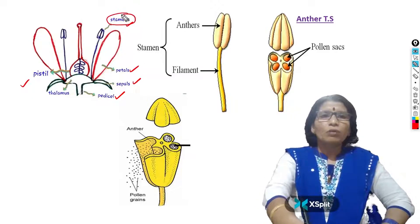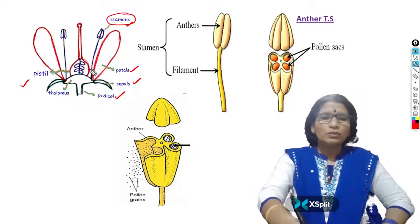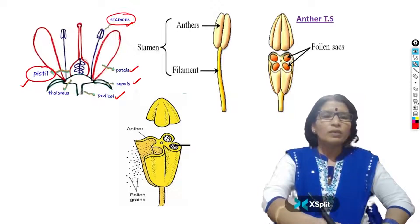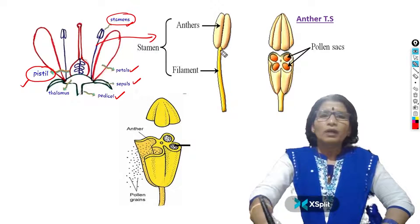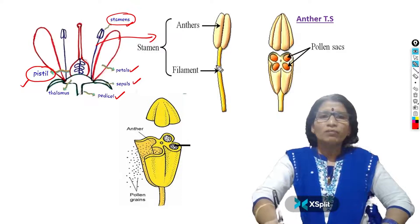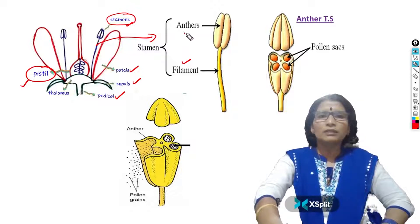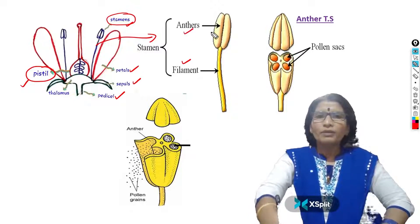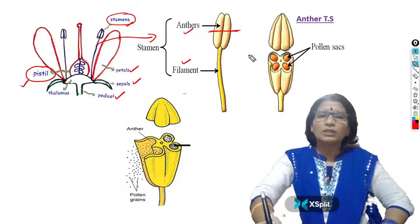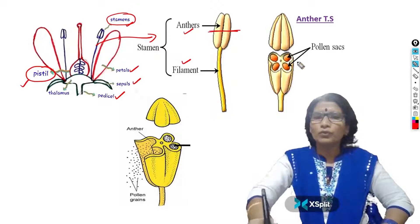The stamen we can call the male sex organ, and the pistil we can call the female sex organ. On the stamen, a small stock-like structure is present — somewhat lengthy — that is called the filament. Above the filament, a somewhat bulging structure is there, that is the anther. When we cut this anther — when we take a transverse section — the view is like this: inside the anther, 4 pollen sacs are present.